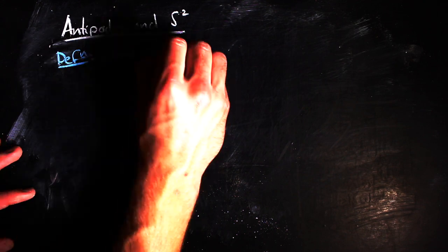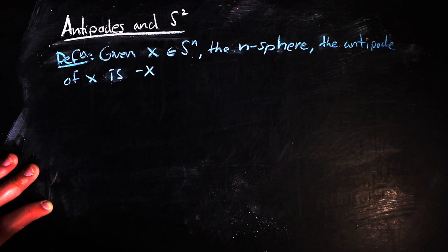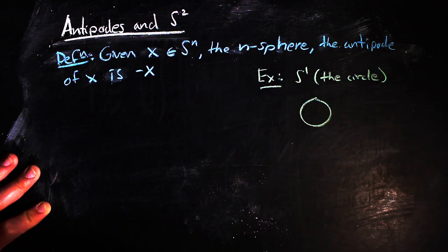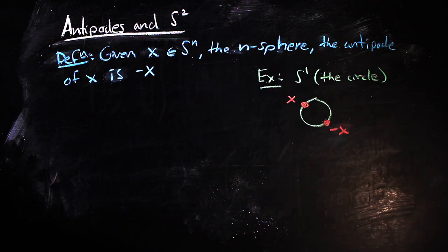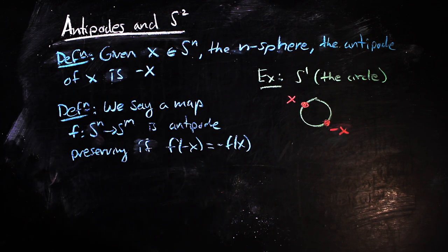First off, we're going to be working on the unit sphere, and we're concerned with the value of our mapping at antipodes, points that are opposite from each other on a sphere. One important type of mapping to keep in mind are those that are antipodal-preserving.